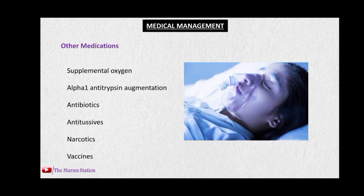Other medications include supplemental oxygen when blood oxygen levels decrease significantly, alpha-1 antitrypsin augmentation for persons deficient in the enzyme, antibiotics for repeated infections, antitussives for coughing, narcotics, and vaccines. Influenza vaccines can be used to control repeated episodes of lung infections, which decreases COPD exacerbations.